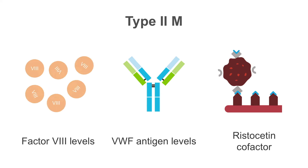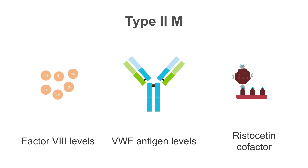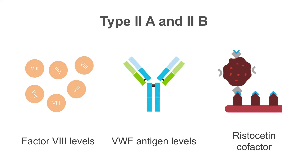In type 2M, von Willebrand's factor antigen levels will be normal, while functional activity and factor 8 levels are low. This is because in type 2M the multimers are present but do not work properly. In types 2A and 2B, the results of the von Willebrand's disease panel vary.